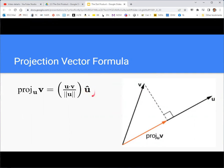So this gives you the direction of u. This gives you the magnitude that we just derived in the previous slide. And that is your projection.